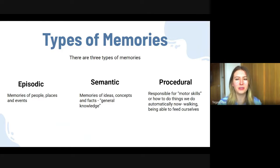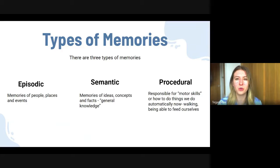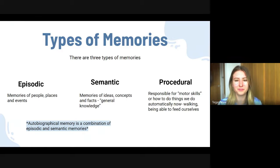For example, we can walk automatically or feed ourselves — we don't know how to do that when we're very young, but that memory stays with us and we can do it automatically. There's also a fourth type, which is autobiographical memory, and that's a combination of both episodic and semantic memories.